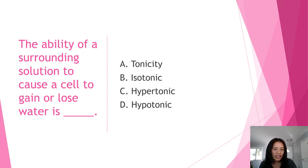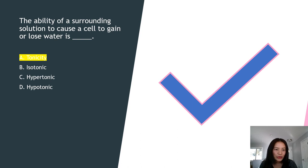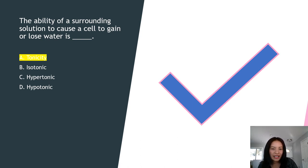Next question: the ability of a surrounding solution to cause a cell to gain or lose water is what? A) tonicity, B) isotonic, C) hypertonic, or D) hypotonic? The answer is A, tonicity. Isotonic is when the concentration of two solutions is the same and no water is moved. Hypertonic means having a higher concentration of solute than the other solution. Hypotonic means having a lower concentration of solute than the other solution.